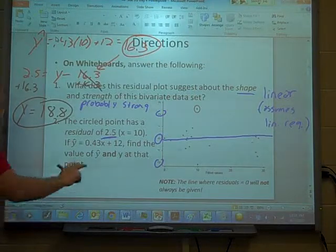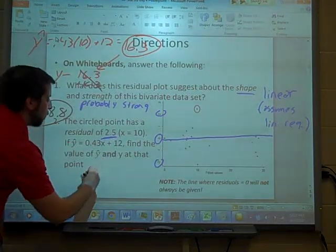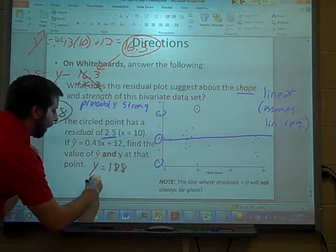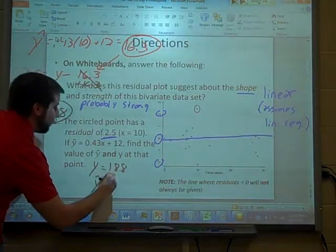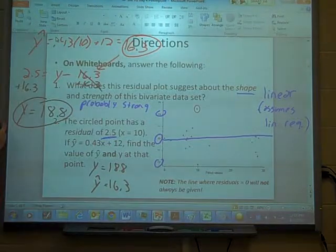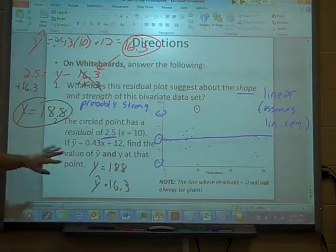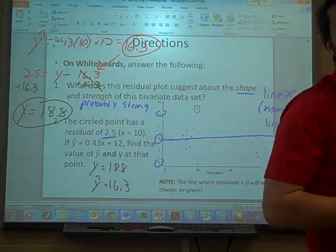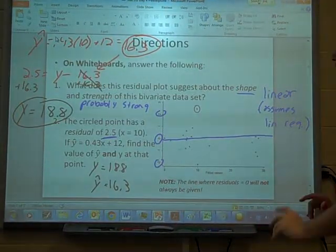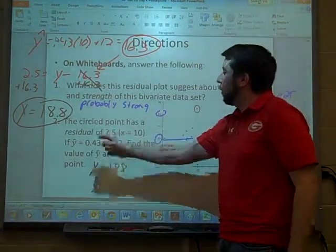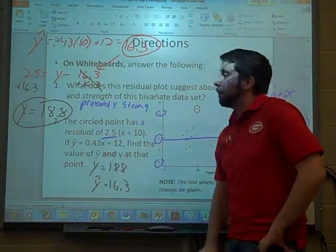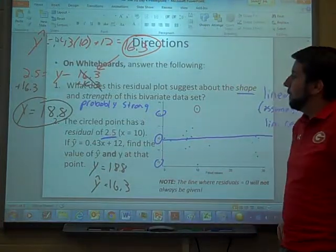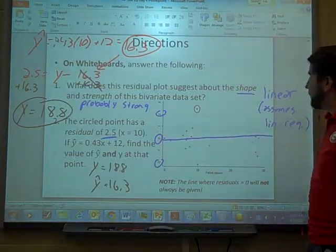So for that x equals 10, the actual y is 18.8, but we predicted that y, the y hat, would be 16.3. So again, know the difference between y and y hat. Y hat is what the model predicts it'll be. Y is what it actually is. And we can use that residual to calculate one or both of them. Of course, to calculate y hat, you need the equation as well. But yeah, let's take a look at that for a sec. This is the kind of work you'll be expected to do.